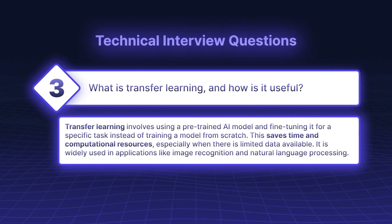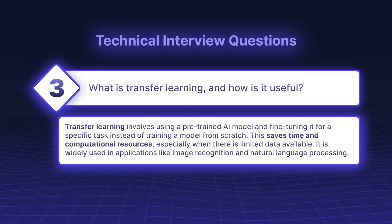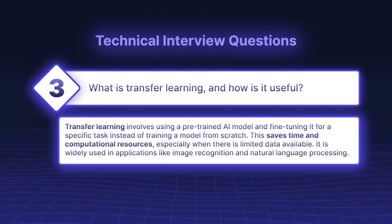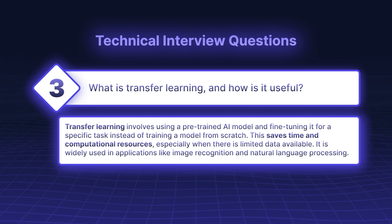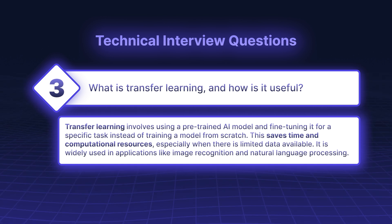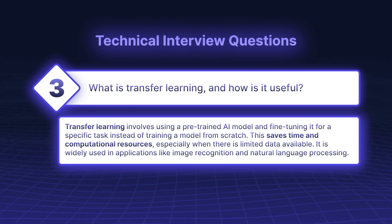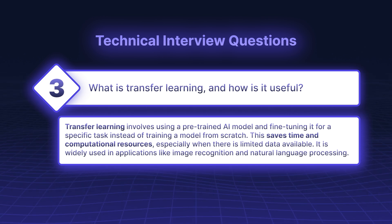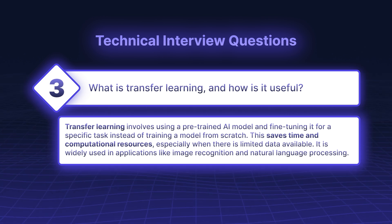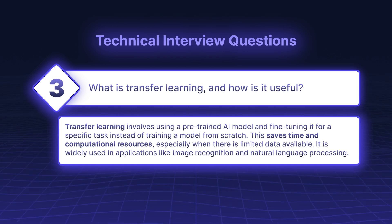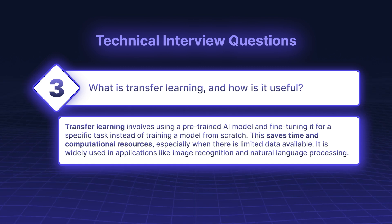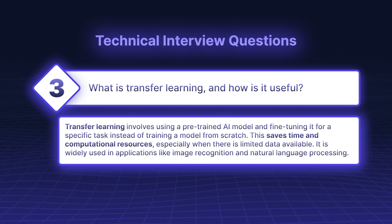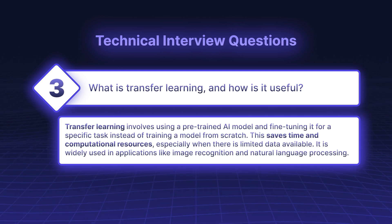What is transfer learning and how is it useful? Transfer learning involves using a pre-trained AI model and fine-tuning it for a specific task instead of training a model from scratch. This saves time and computational resources, especially when there is limited data available. It is widely used in applications like image recognition and natural language processing.